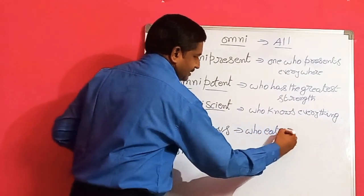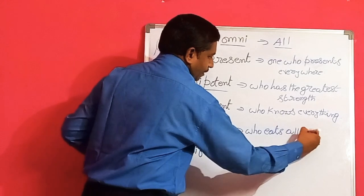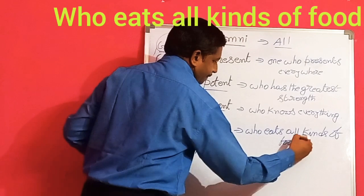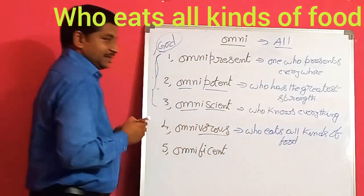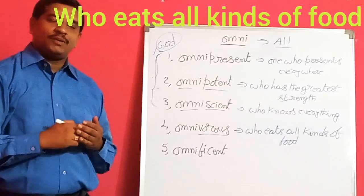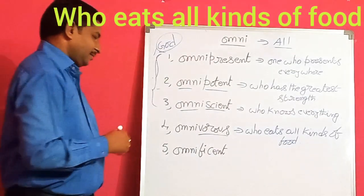Who eats all types or all kinds of food is called omnivorous. The bird crow is omnivorous. The man is omnivorous.